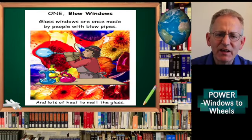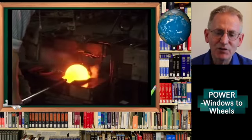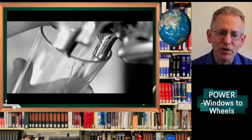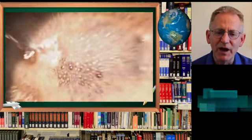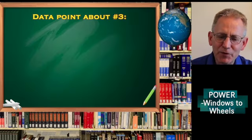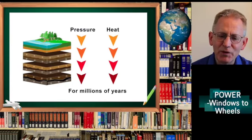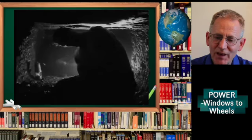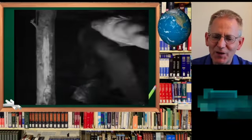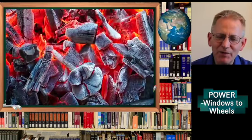Blow windows. Glass windows are once made by people with blowpipes and lots of heat to melt the glass. In the past, glass workers drink beer to keep cool. The glass is hot. Brewers make beer in steaming hot copper boilers. A data point about number three: Millions of years ago, there were lots and lots of plants. As the plants died and piled up on top of each other, they turned into what's called peat. Over time, peat gets buried and pushed and pushed, more heat and more pressure, and it turns into coal. Fast forward to not too long ago, a couple hundred years ago, people learned to mine the coal and burn it to get heat. In our example, they used the heat to boil the beer in copper boilers.